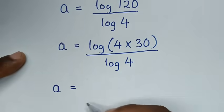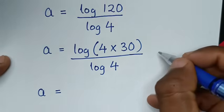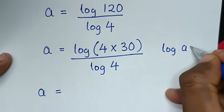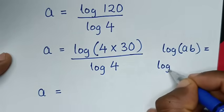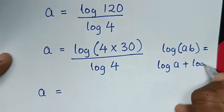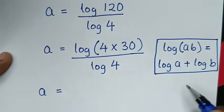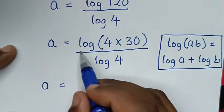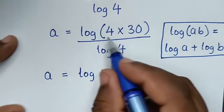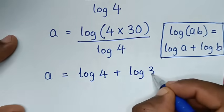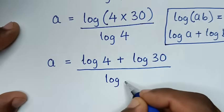So a is equal to log of 4 times 30 over log of 4. This part is in the form of the product rule: log(a × b) = log(a) + log(b). Applying this, we get log of 4 plus log of 30, all over log of 4.